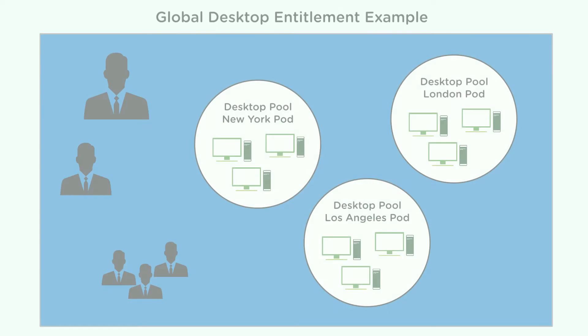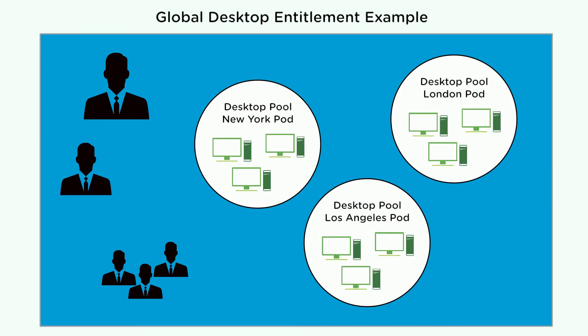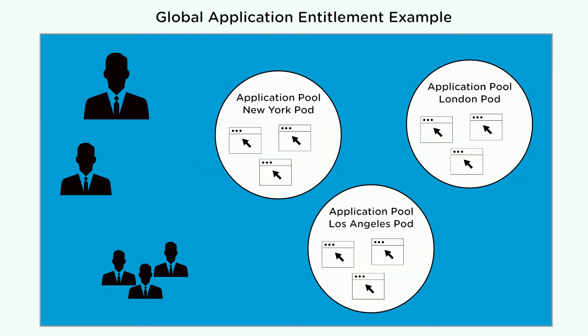A single global entitlement can contain resources from across the entire pod federation. In this example, a global desktop entitlement contains desktop pools from three different pods located in three different data centers. Similarly, global application entitlements can contain application pools from different pods in different data centers.